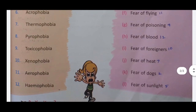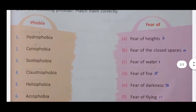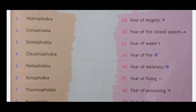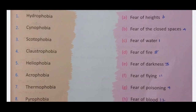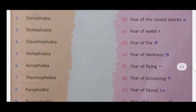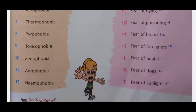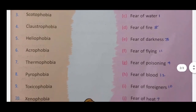Fear of darkness is nyctophobia. Fear of closed spaces is claustrophobia — if we were to close a room, that fear would apply. Heliophobia is the fear of sunlight.